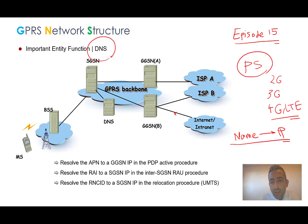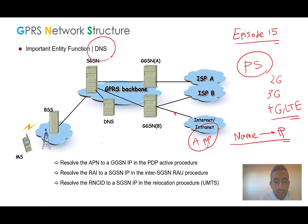In the internal core network of mobile networks we also have another DNS that has many functions and is very important especially in the PS part. One of its roles is resolving the APN to a GGSN IP address. Each subscriber in the PS network who has activated their data service has an APN, and DNS resolves the APN to a GGSN IP in the PDP activation procedure.